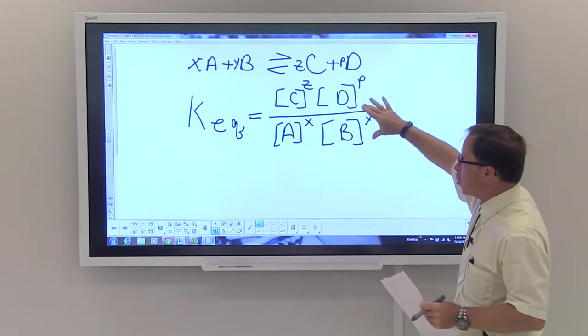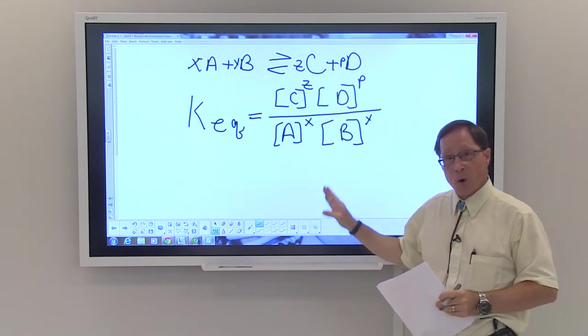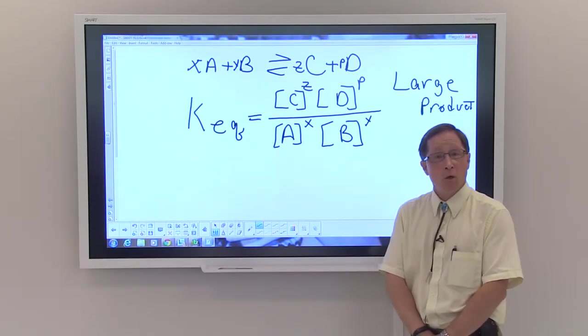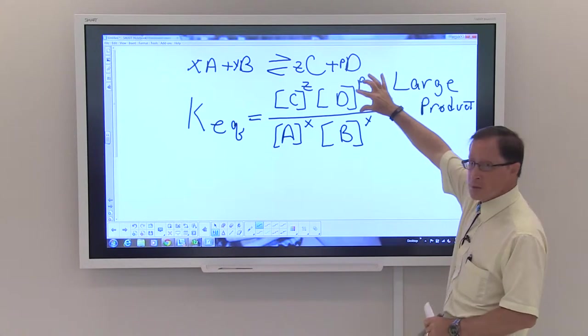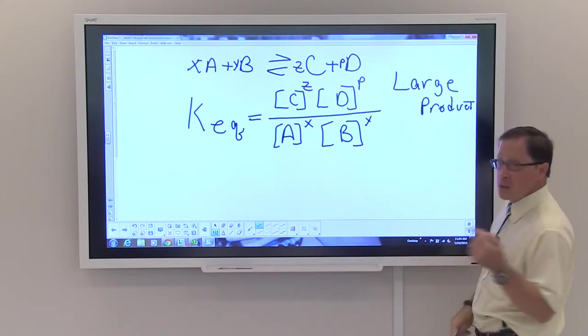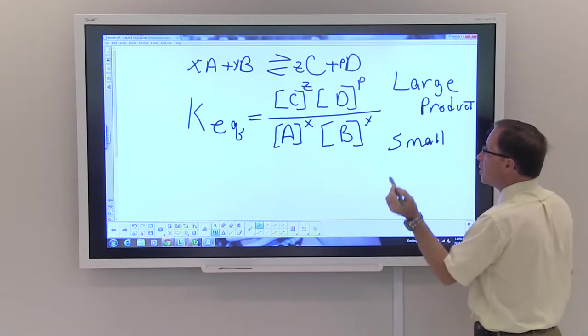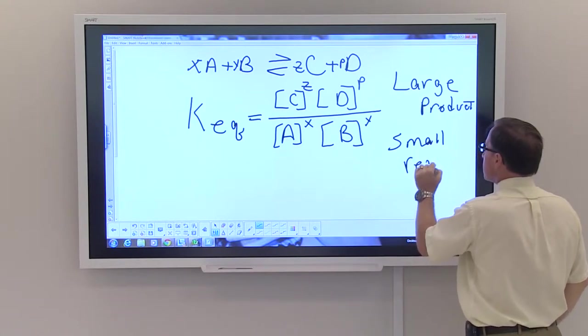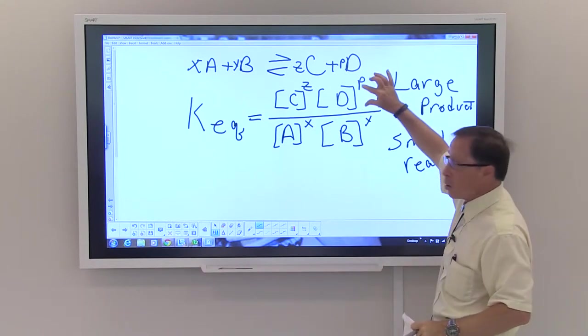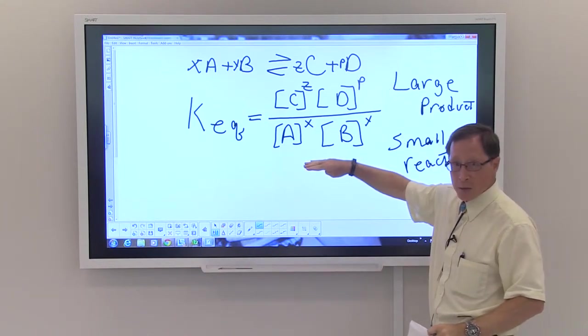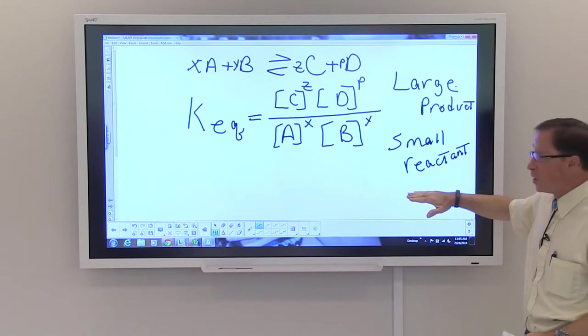The KEQ essentially will tell us which side of the process is favored. If KEQ is large, that means that products are favored - there's more of this than there is that. If KEQ is small, that means that your reactants are favored. The reason being is that there's a small amount of this present, most of this is present in the process. So large KEQ means product, small means reactants.